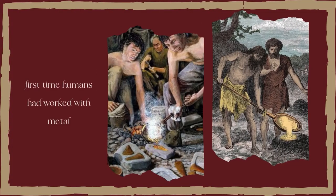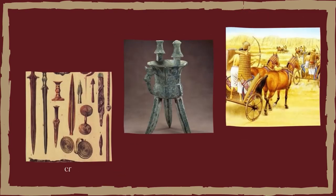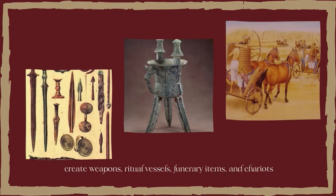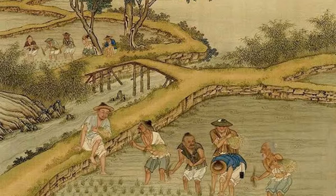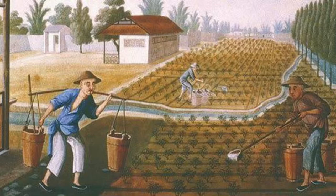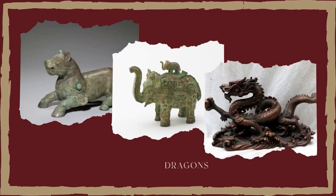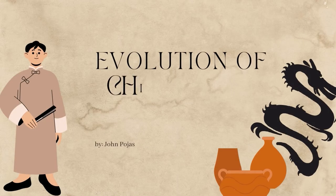It ends at the start of the Han dynasty, 206 BC to 220 AD. This was the first time that humans had worked with metal, and they fashioned bronze — a metal made of copper and tin — to create weapons, ritual vessels, funerary items, and chariots. Ancient China was an agricultural society, and art of this time is often minimal, featuring bronze work of mythological creatures, elephants, and dragons.